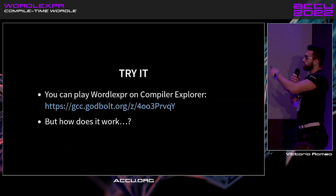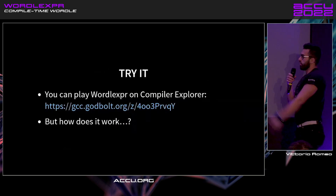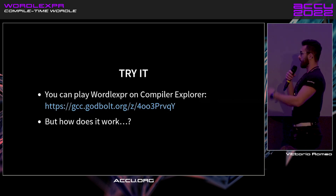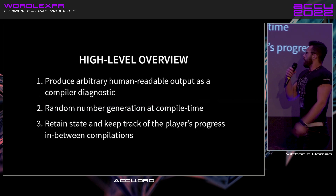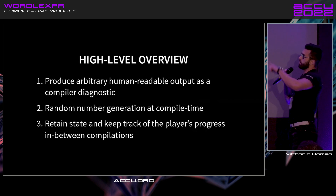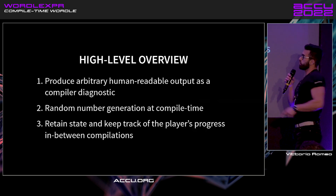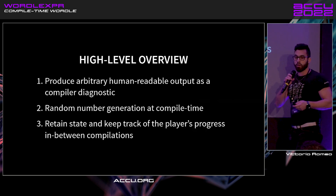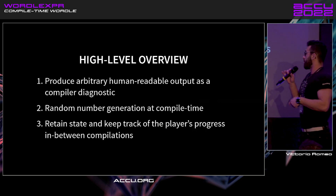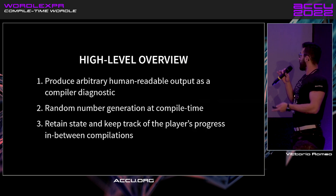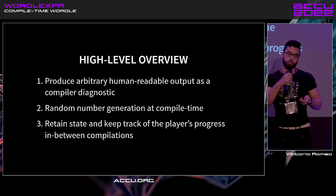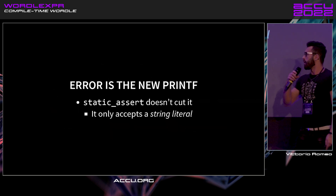First of all, you can try it out on Godbolt — you can find the slides on GitHub, there's a link later. The way it works is basically this: I need three things — a way of producing arbitrary human-readable output as an error, random number generation at compile time, and retaining state and keeping track of it for future compilations.